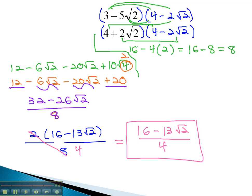We can rationalize denominators if there's a binomial, any adding or subtracting, by multiplying by the conjugate.